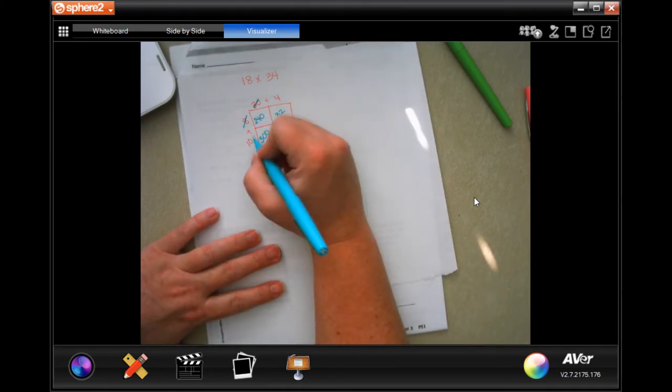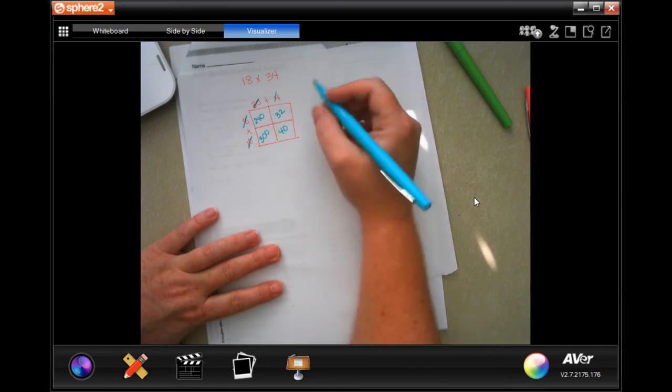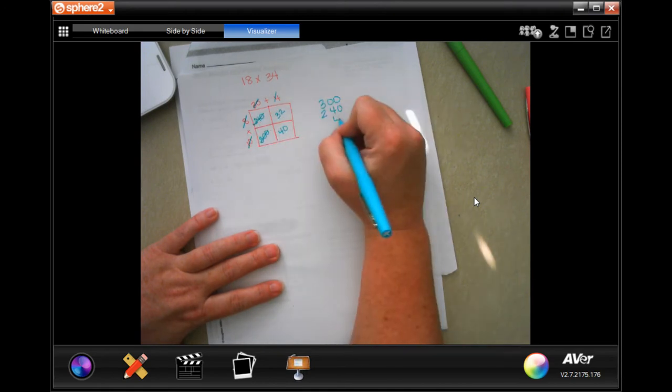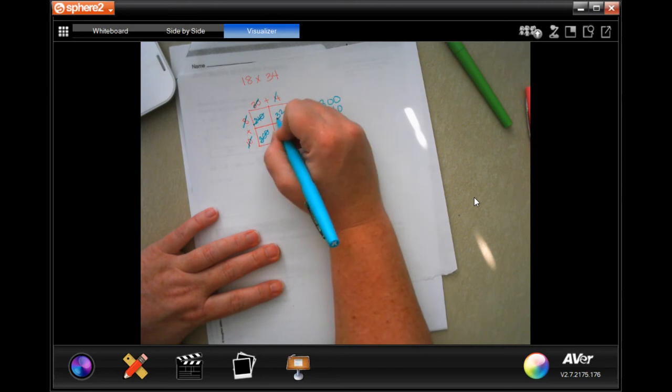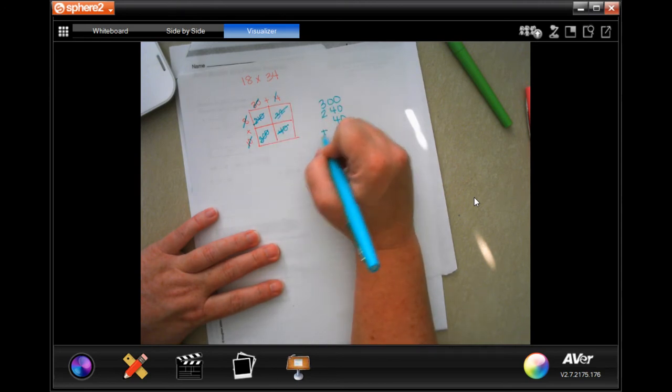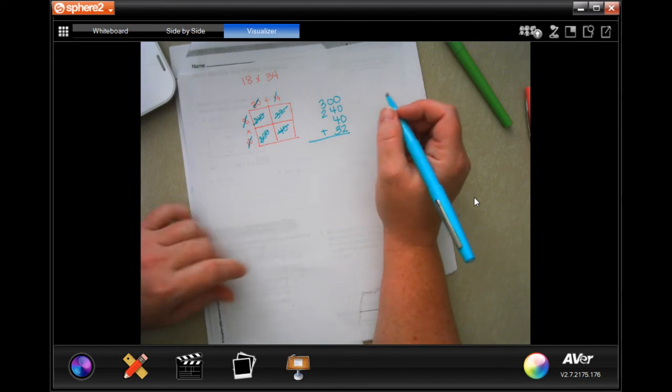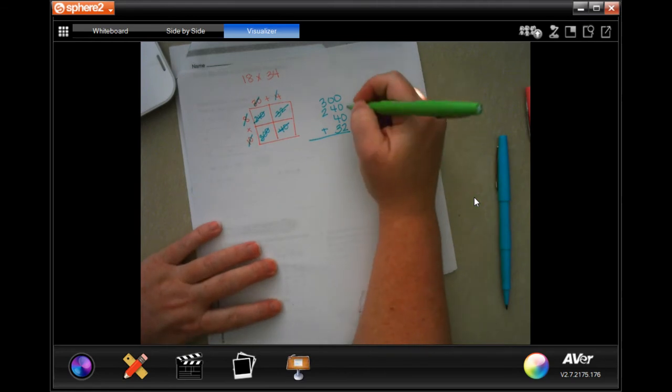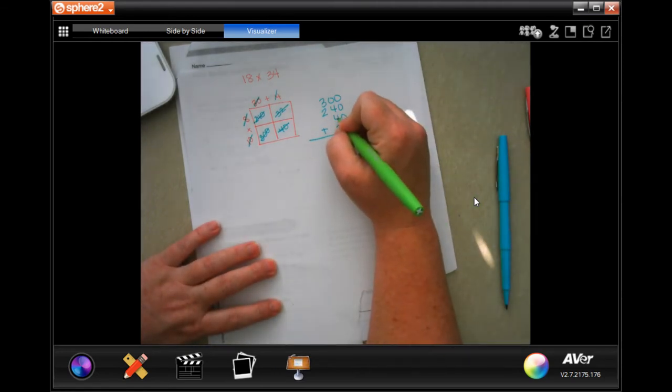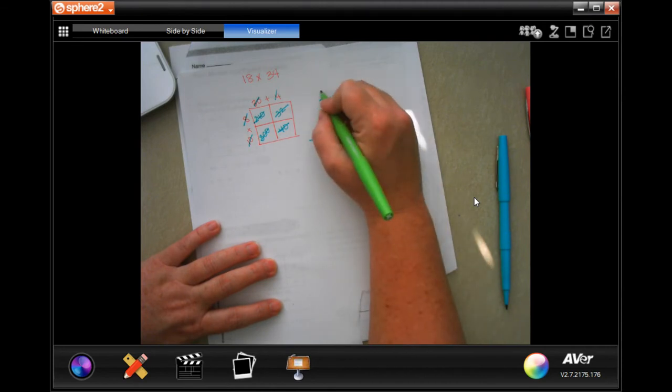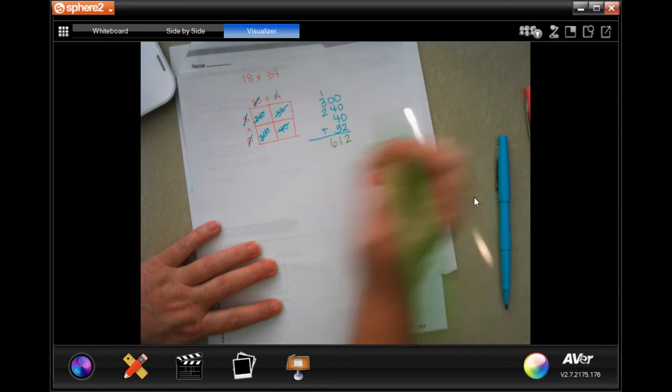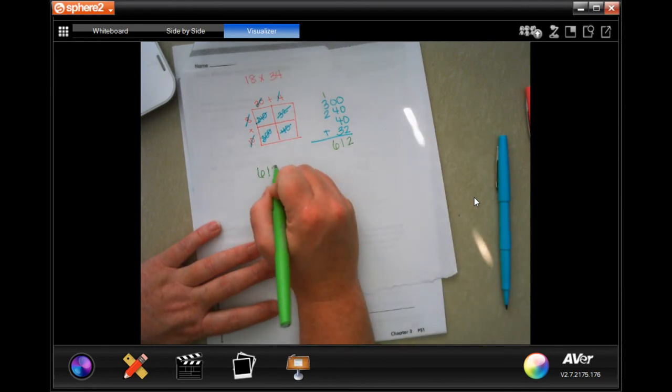So now all I'm going to do is take the boxes that are here and add them up over on the side. So I have 300, I have 240, I have 40, and I have 32. I cross them off just so I make sure I get them all and I don't have to backtrack. All the way down there's a 2. 4 plus 4 is 8 plus 3 more is 11. Carry 1. 1 plus 3 is 4 plus 2 more is 6. So 18 times 34 is 612.